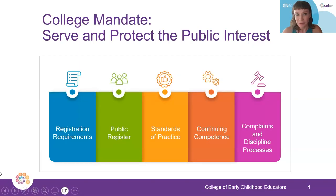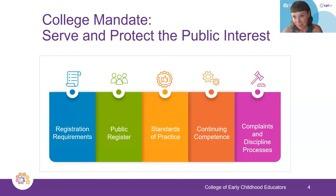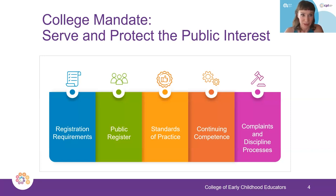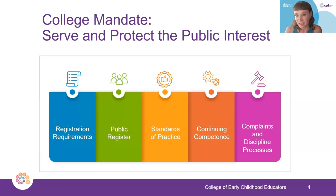So this slide demonstrates the college's mandate — the mandate being to serve and protect in the public interest, the public having an interest in keeping children safe. We do that through a number of different mechanisms. There are registration requirements for all members before they can become a registered member of the profession. Once you are registered with the college, your name is visible on the public register, which is a place where any member of the public or employers can verify your credentials and whether or not you're a member in good standing. That transparency demonstrates and builds trust in the public that an ECE in good standing with the college is adhering to the code of ethics and standards of practice, as well as engaging in continuing competence.